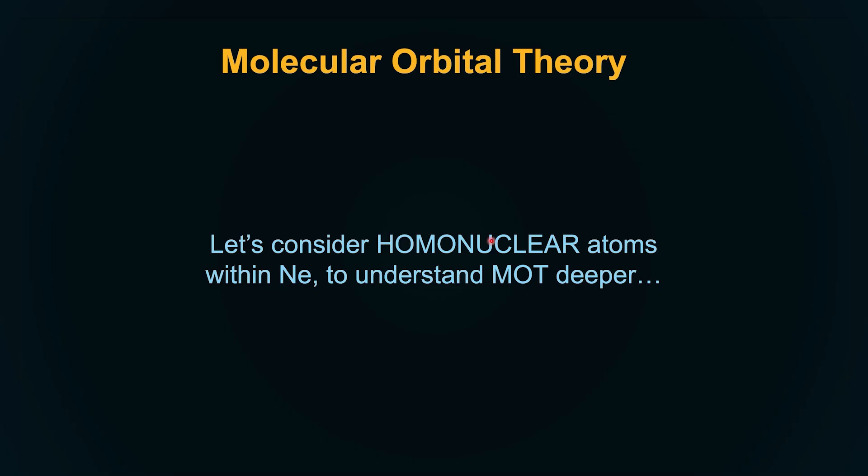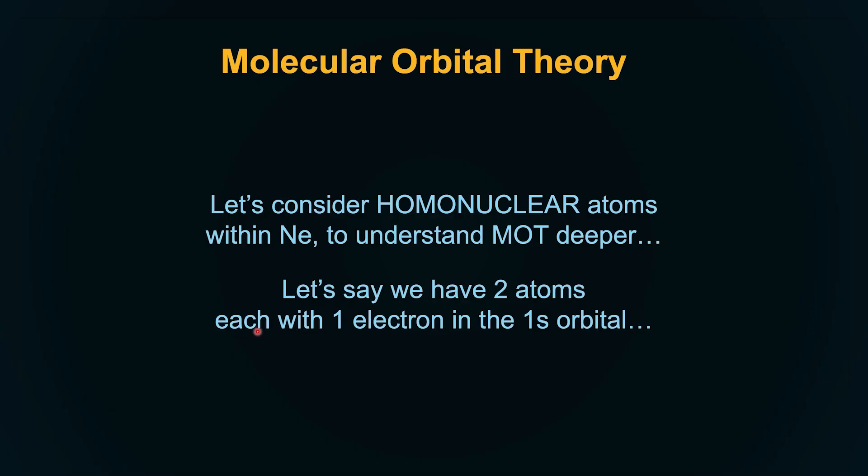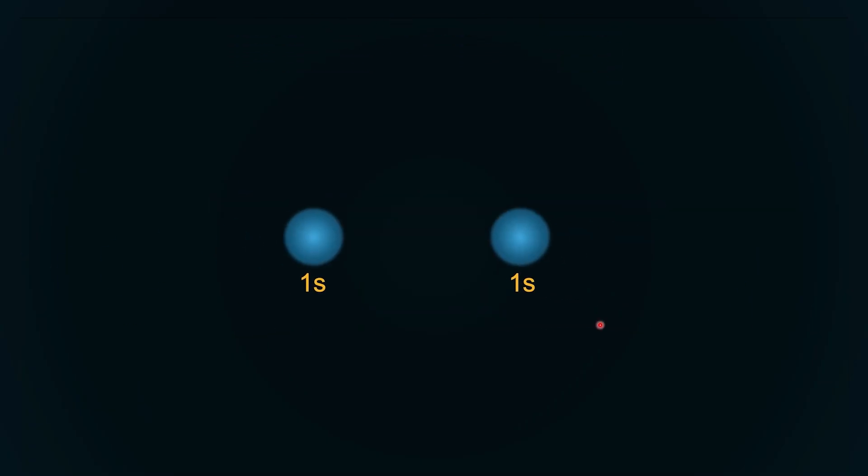A bonding molecular orbital is always lower in energy because that causes electrons to get localized between the nuclei and it's a stabilizing state for the molecule. Antibonding molecular orbital is higher in energy because it's a destabilizing orbital. Great. With that, let's consider homonuclear atoms. What are homonuclear atoms? Atoms of the same kind that are trying to get together and form molecules within neon just to understand molecular orbital theory a little deeper. Let's say we have two atoms, each with one electron in the 1s orbital. How would that behave?